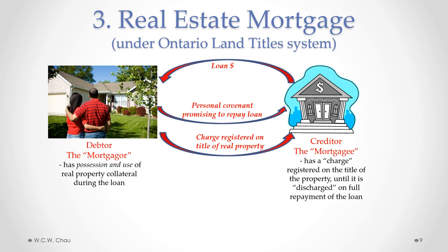The Ontario land title system is a registration system where ownership of property is registered. You can register a charge against the title of a piece of real estate arising from this mortgage. The mortgagor retains possession and use of the property during the term of the loan. The mortgagee has this charge registered on title, which is only removed or discharged once the loan is fully repaid. Anyone who looks up the registration will see that charge, and if anyone buys the property with that mortgage still registered, they take the property still subject to that mortgage.